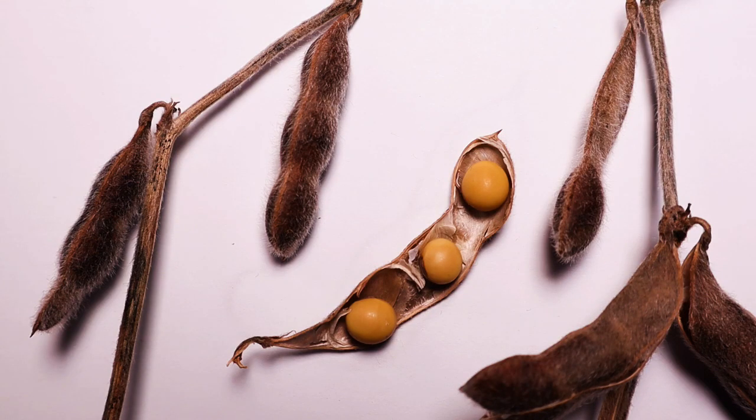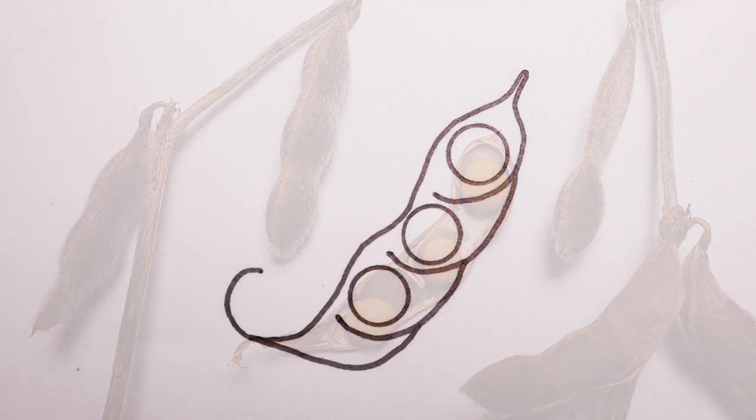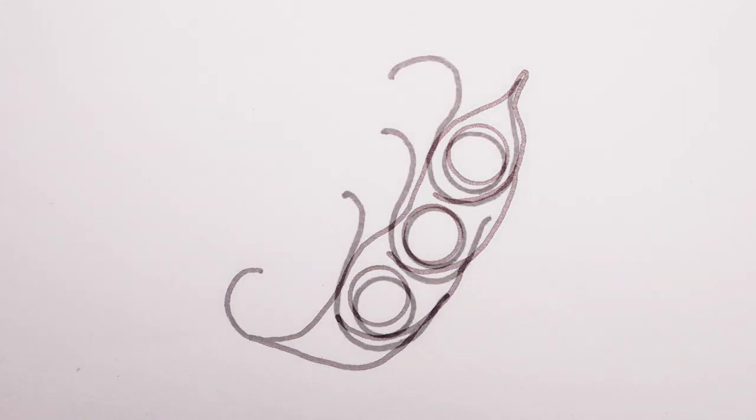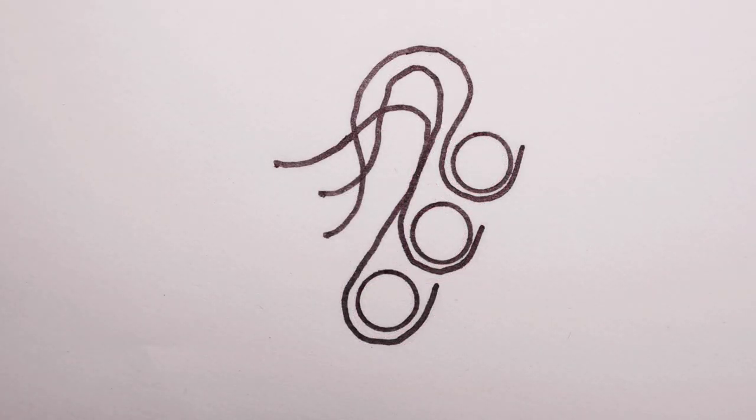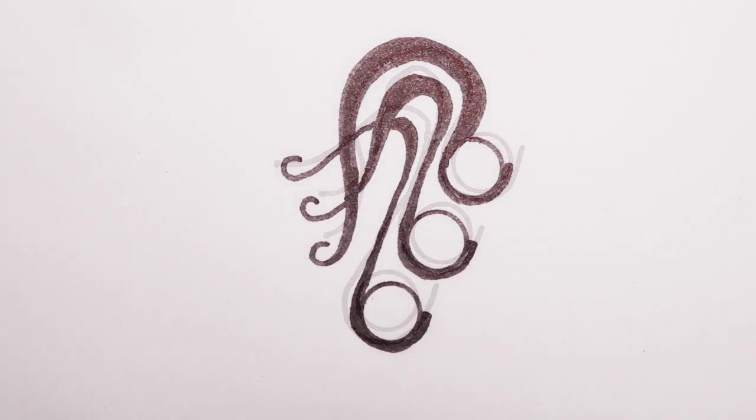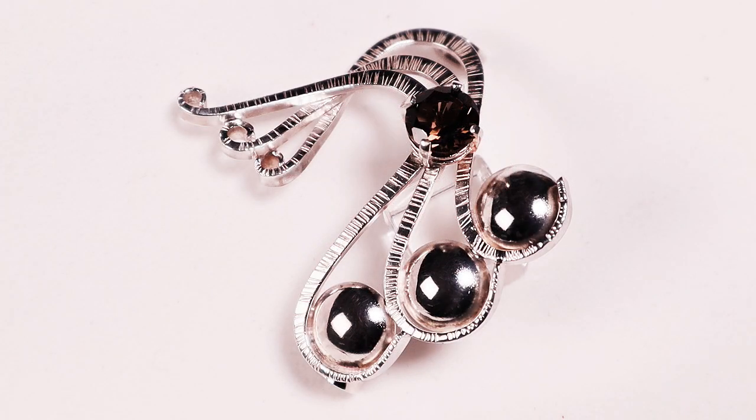A soybean pod has some beautiful lines running through the pod itself. Let's take advantage of those nice swooping lines through the pod and accentuate those. Curl them around. Turn them into some forged wires. Bring them back onto themselves. Use maybe some domes in there to represent the peas themselves. Add a stone setting and you're all set for this design.